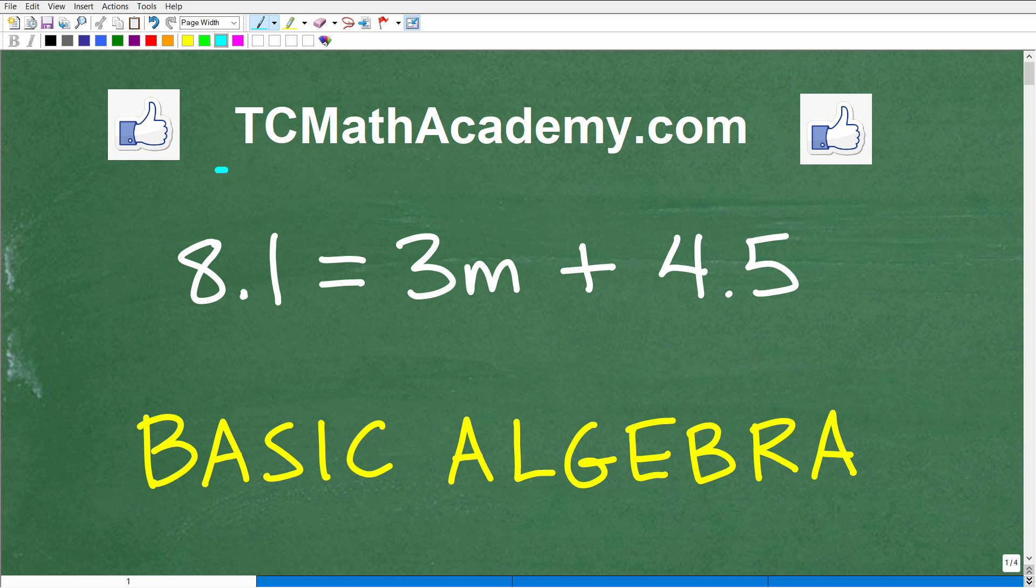Hello, this is John from TC Math Academy, and in this video we're going to be practicing basic algebra. The problem at hand is the following: we have 8.1 equals 3m plus 4.5, and the objective here is to solve for the variable m.